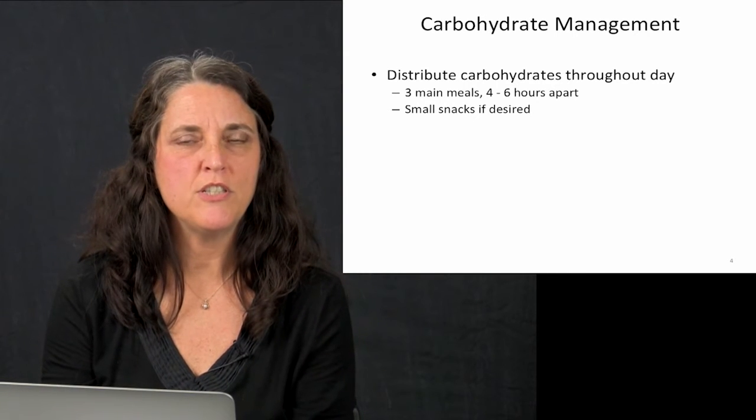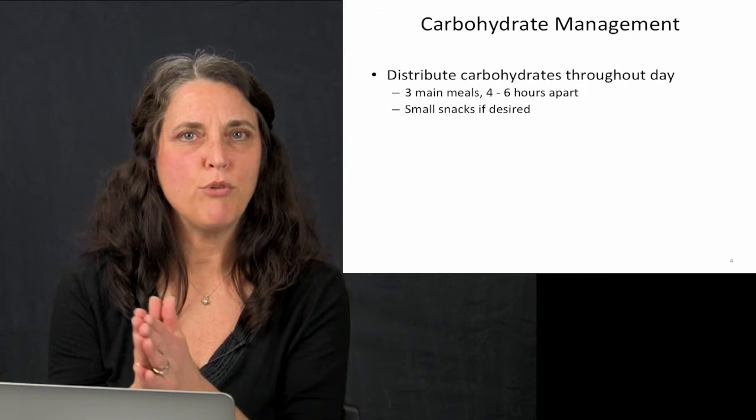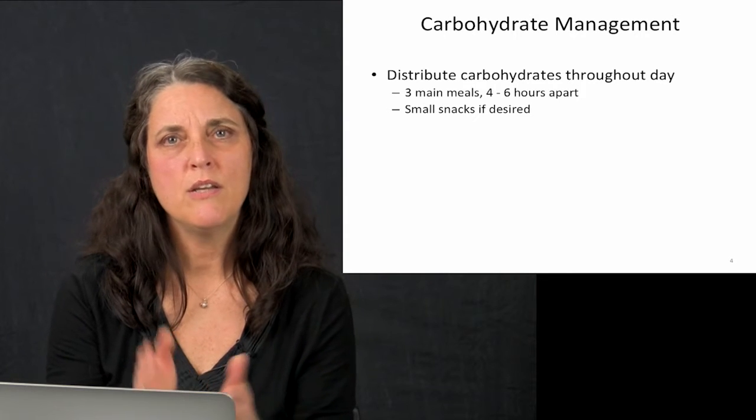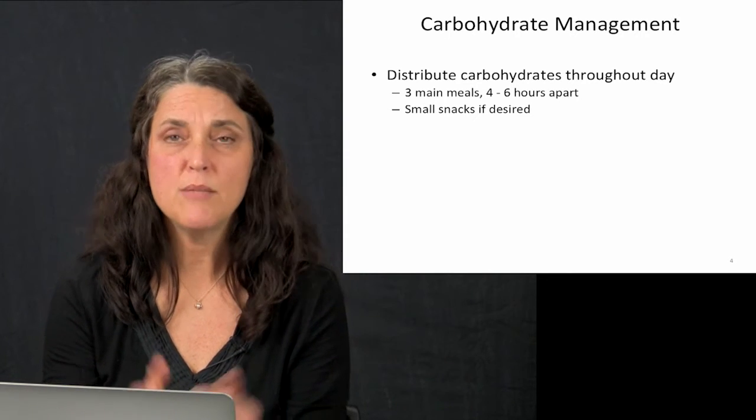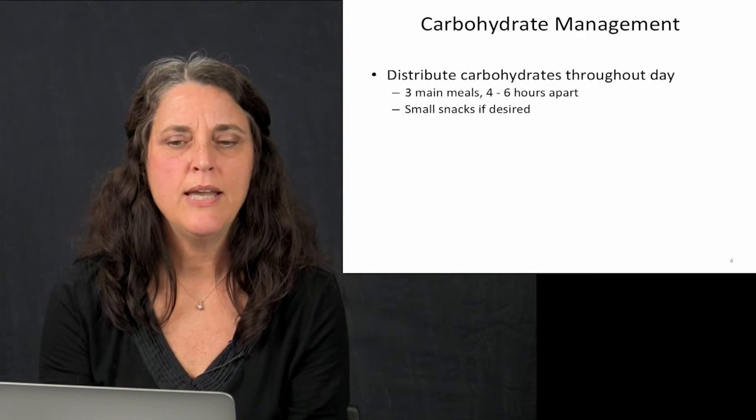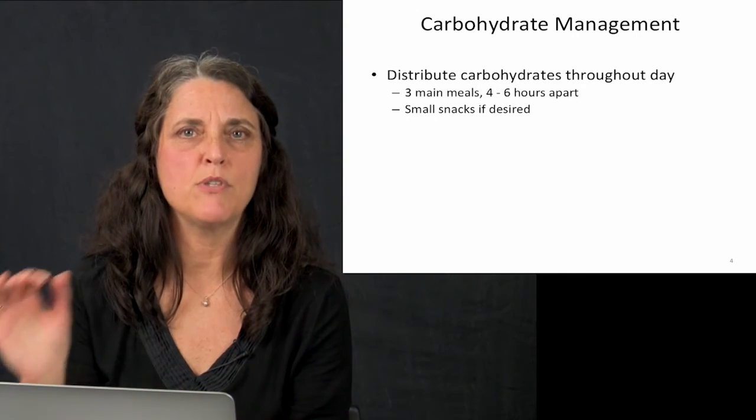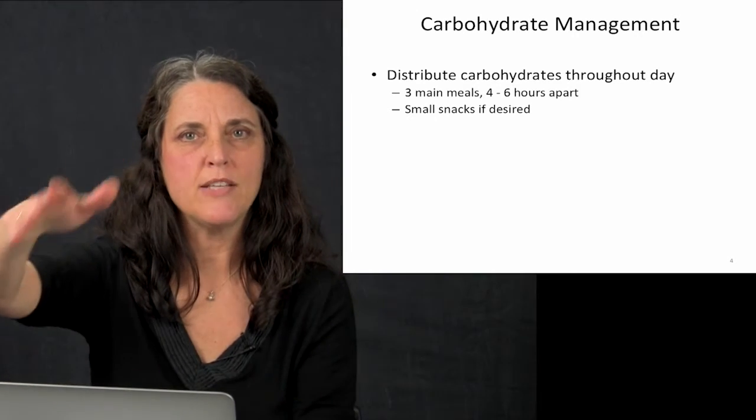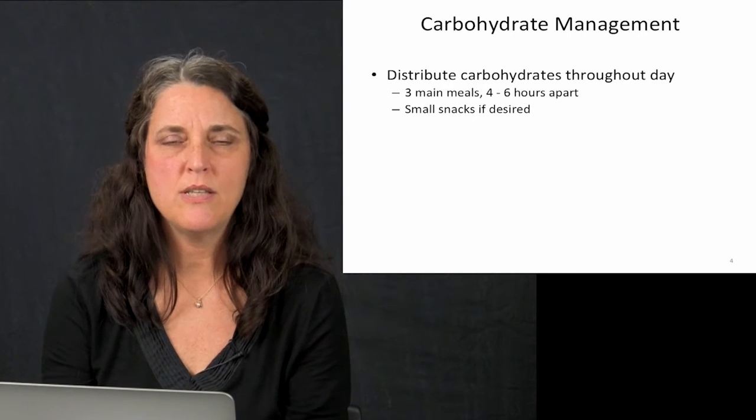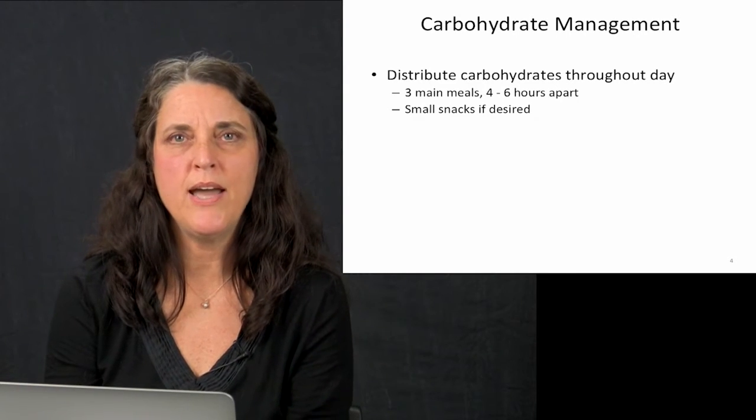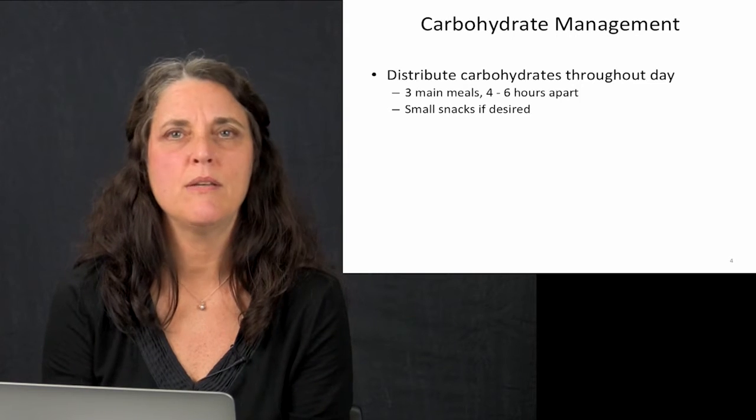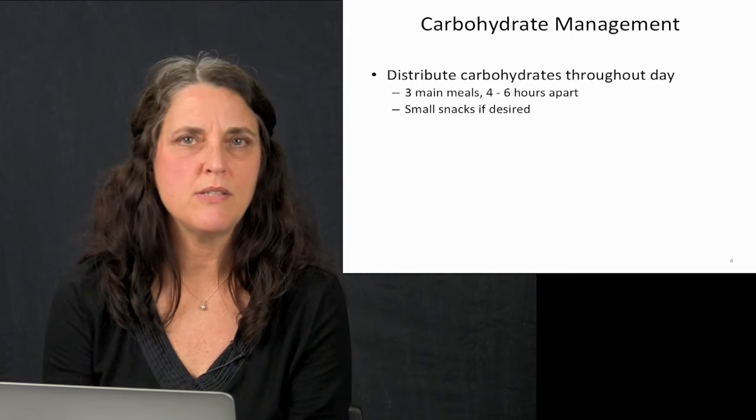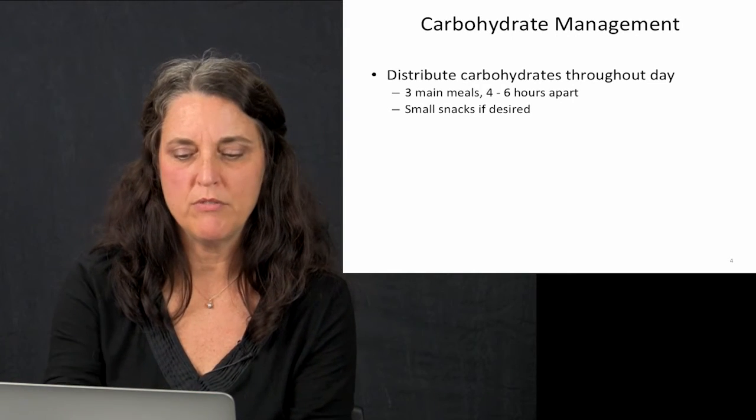So the first strategy is to simply say, let's try to spread the food out between three meals four to six hours apart. It takes about four hours to digest a balanced meal, and by having a meal four to six hours apart, you're getting a more even rise and fall in the blood sugar. Snacks are up to them. Some people want to have six little mini meals, that's fine, or three meals and a snack, that's fine. We work with people individually.